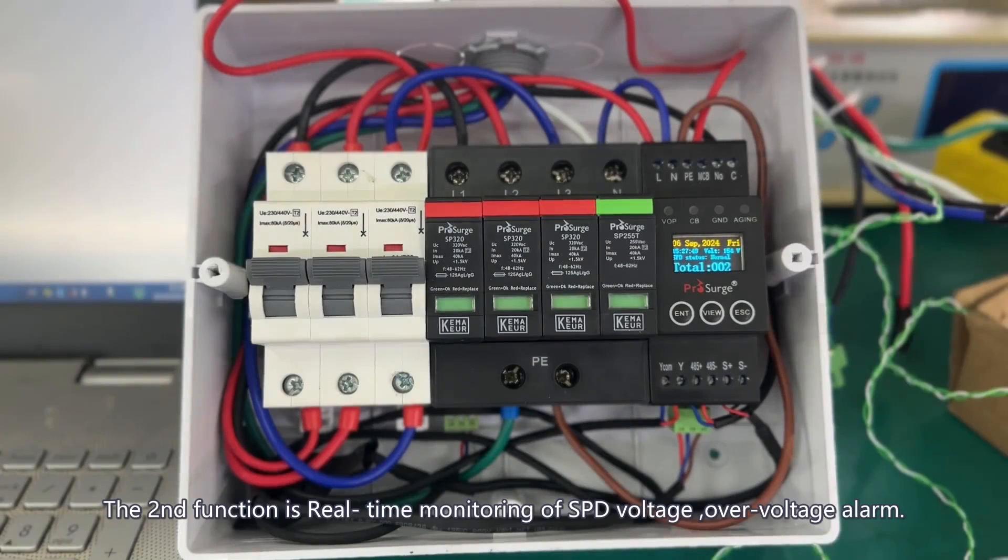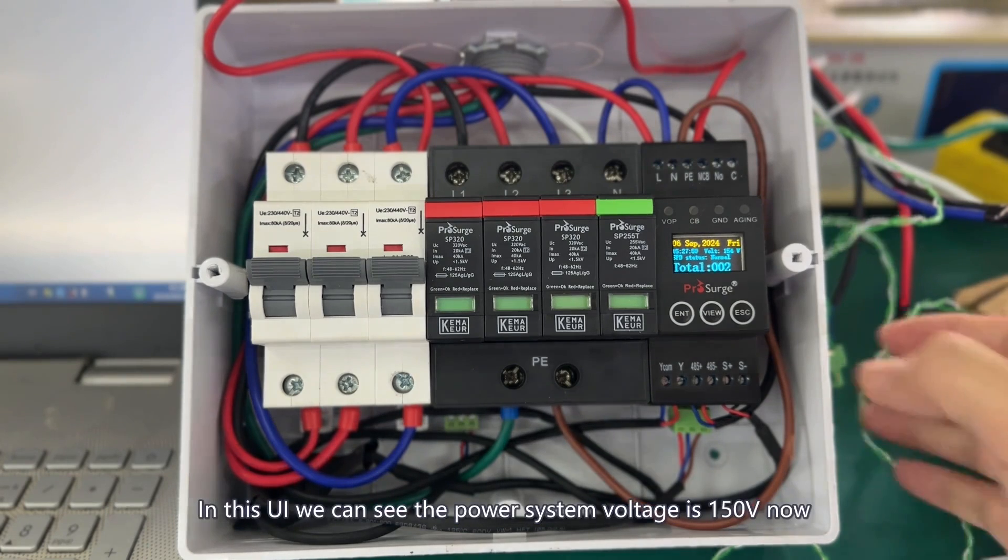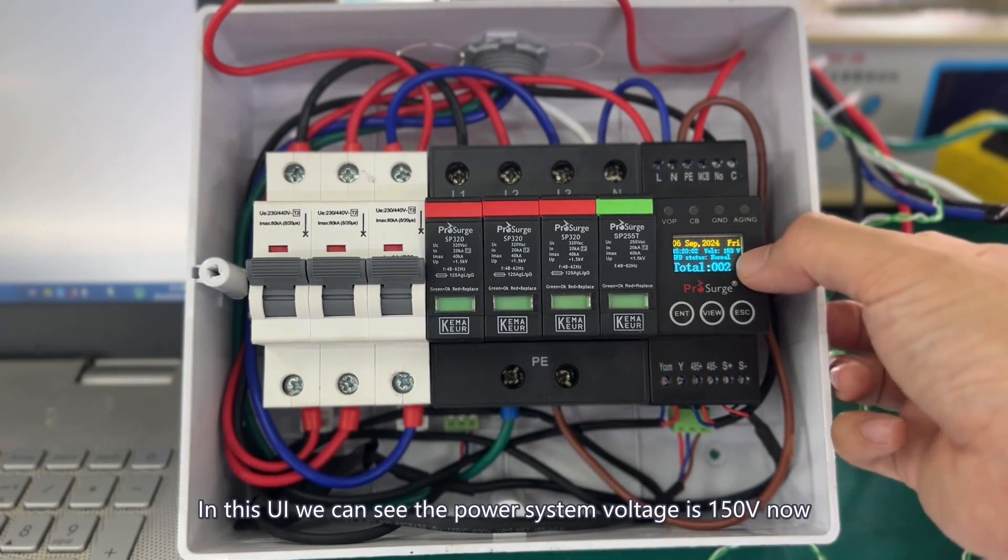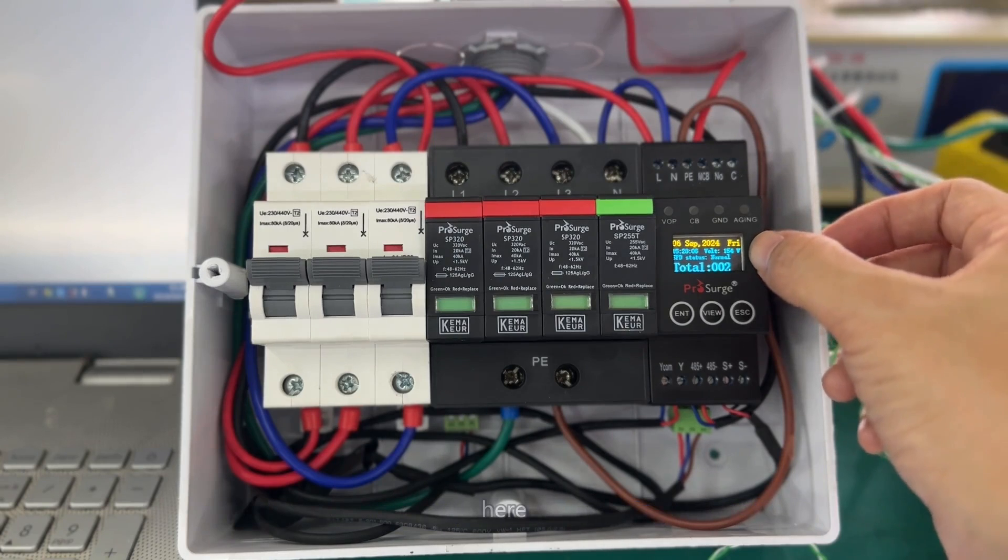The second function is real-time monitoring of SPD voltage. We can set an over-voltage alert. In this UI, we can see the power system voltage is currently 115 volts.